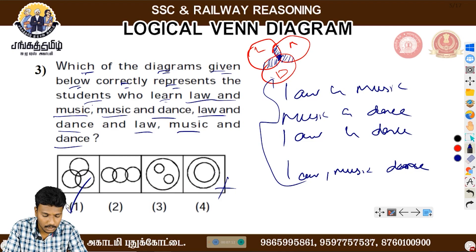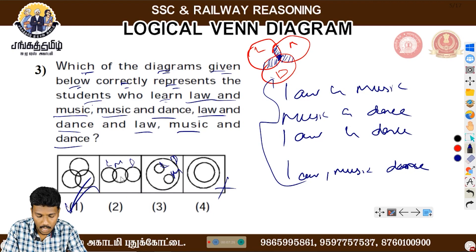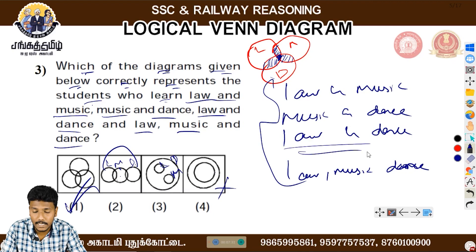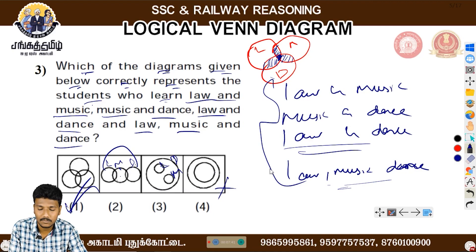We may have to put it on the diagram. If you have law, music, and dance, you must follow the interrelation. If you have a lot of music or music-dance overlap, you can ask about dance combinations. If you have a lot of dance, you don't have to relate them separately. That's why the answer is the first one.